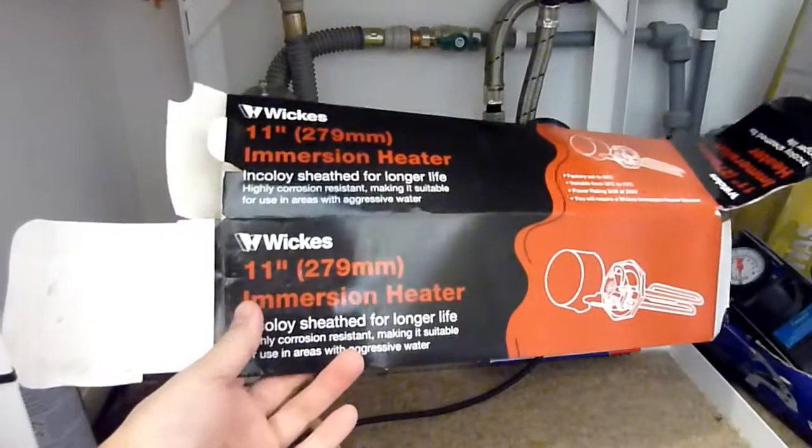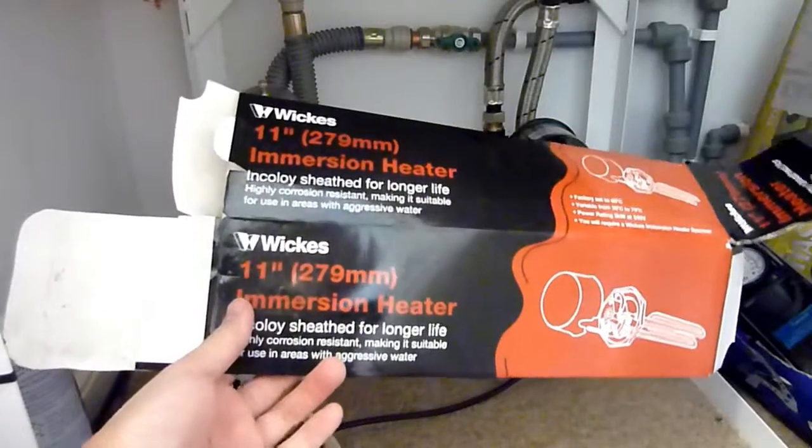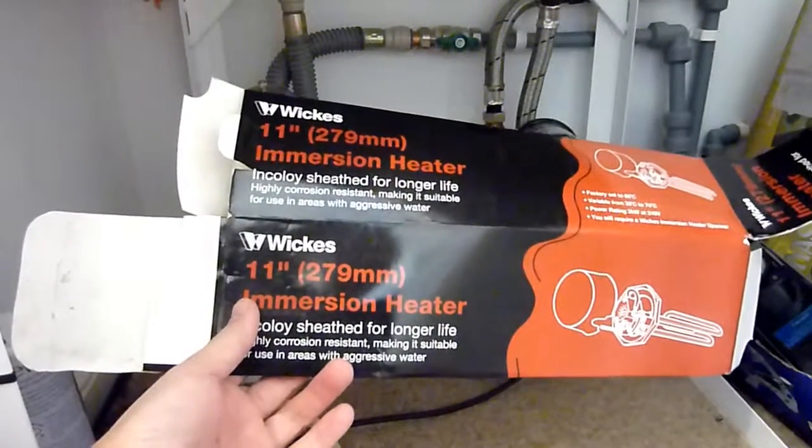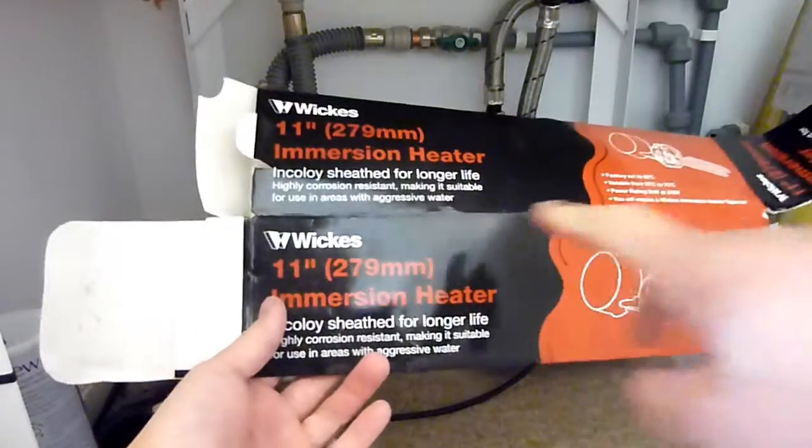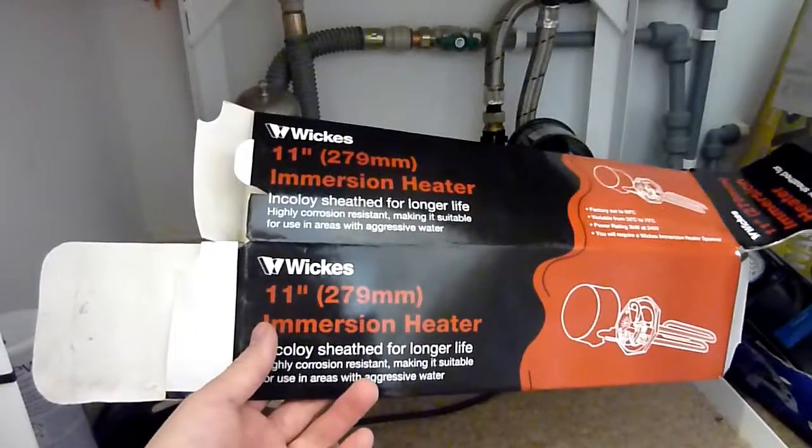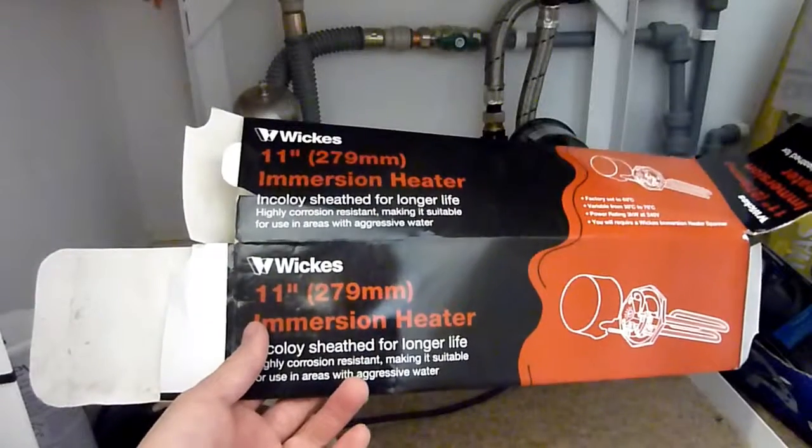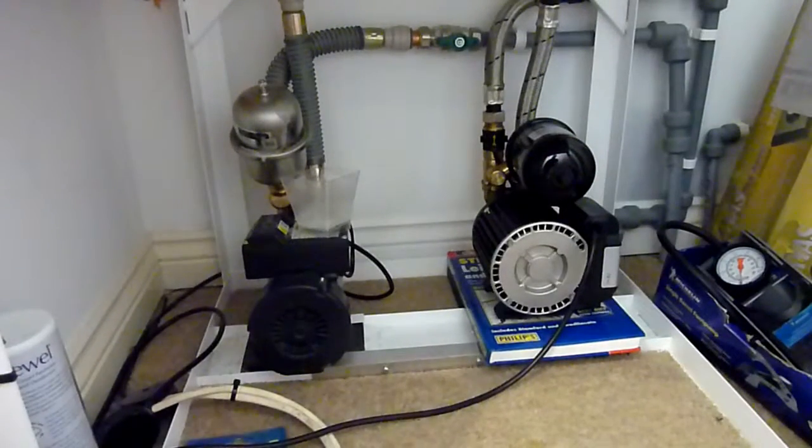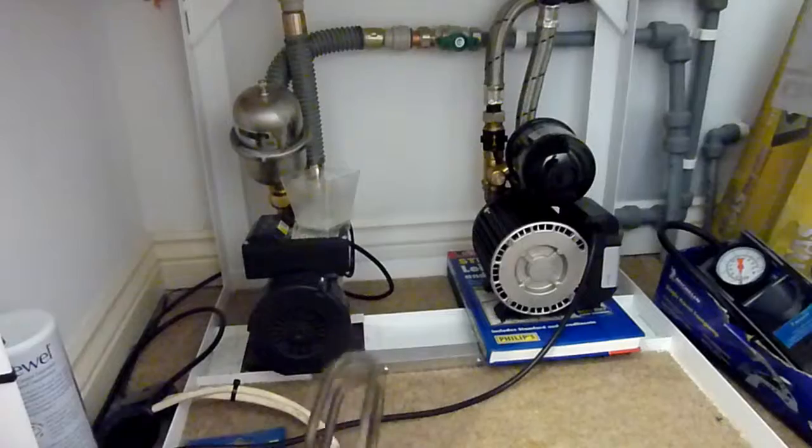Right, the immersion heater for me I bought from Wickes, and I bought this a while ago. It was quite cheap then, it's still quite cheap, but I think the cheapest one I can find now is from Toolstation, about 17 pounds. I bought this about 14 pounds about five years ago. 11 inch, 279 millimeter. This word is important: Incoloy sheath for longer life. Highly recommended if you live in a high calcium carbonate or limescale area. You'll need Incoloy, which is what this is. I live in a high calcium carbonate area.